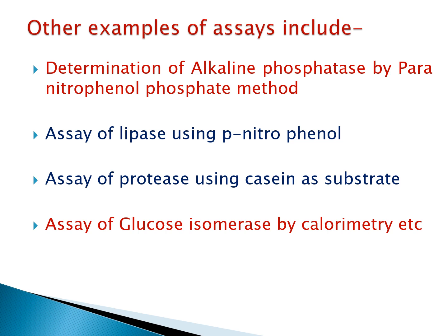There are many other assay procedures available: alkaline phosphatase estimation by the paranitrophenol phosphate method, assay of lipases using paranitrophenol, protease assays where casein is used as the substrate and released amino acids are assayed, and glucose isomerase assay which is also a colorimetric method. All these assay procedures are universally adopted and well established.